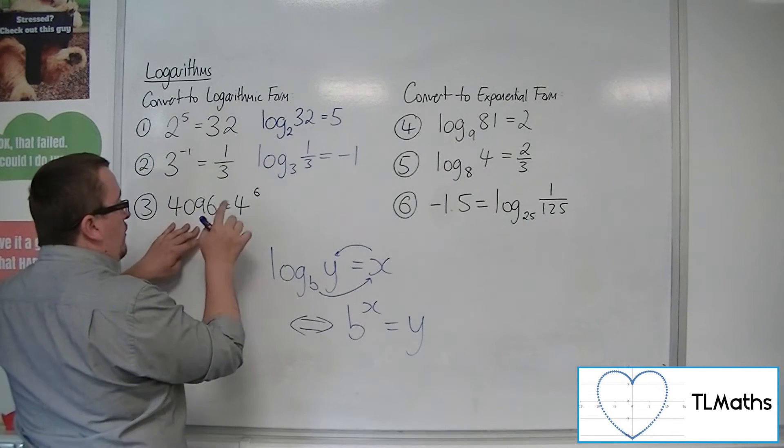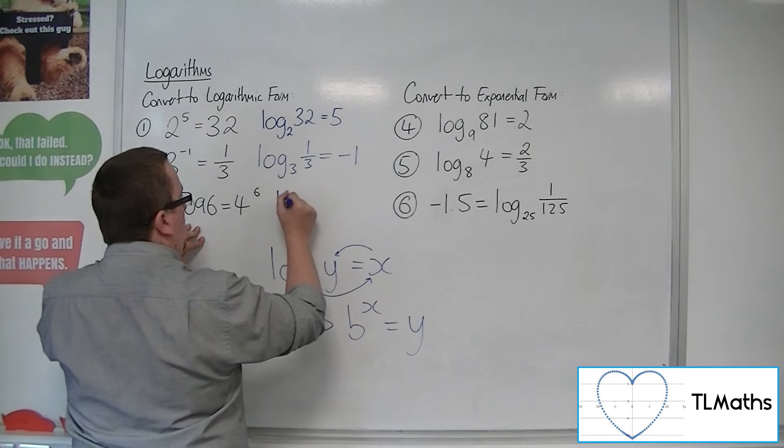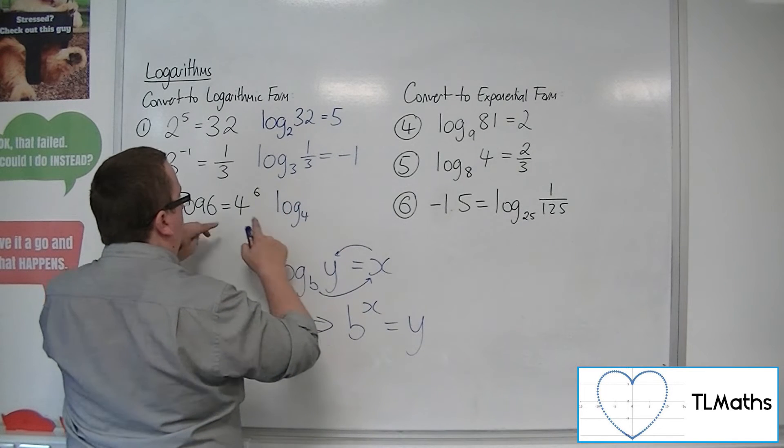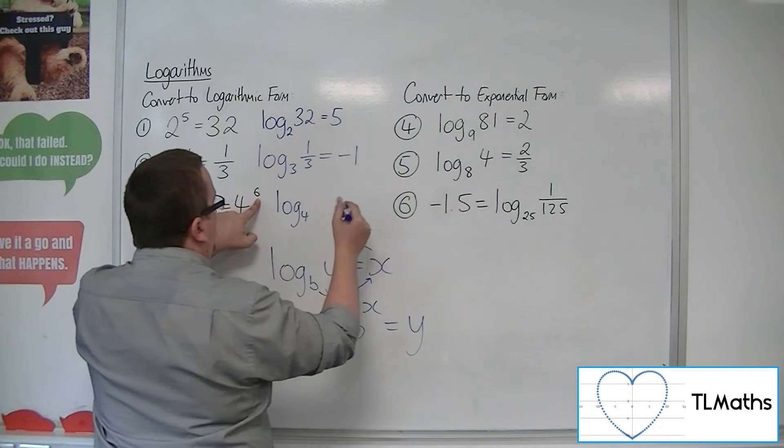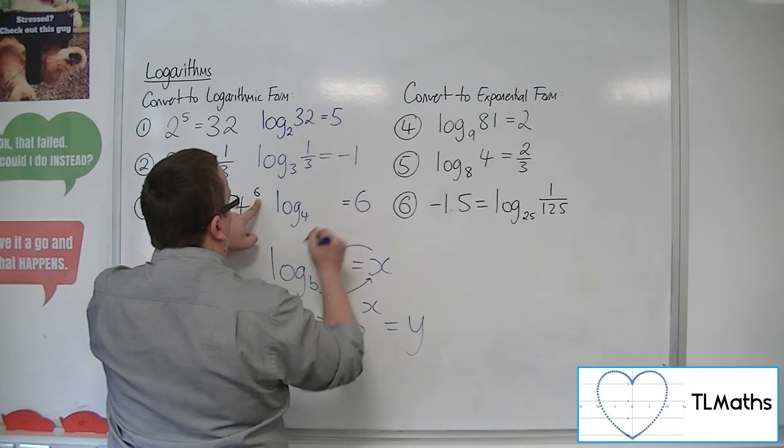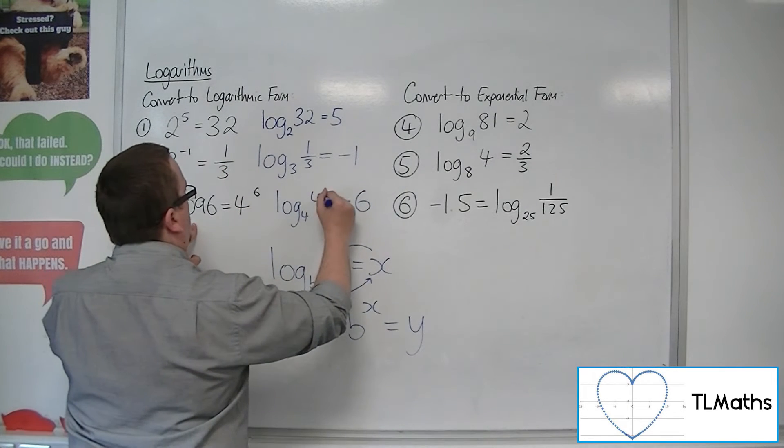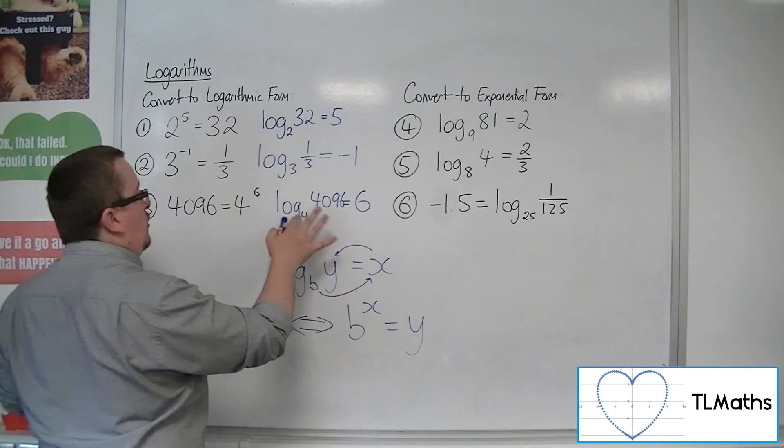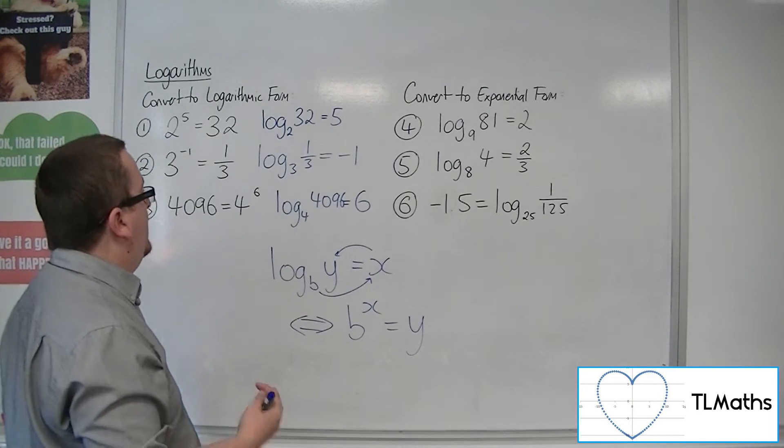Here the base number is 4. So log base 4... 4 to the power of 6. So log base 4 of 4,096 is equal to 6.